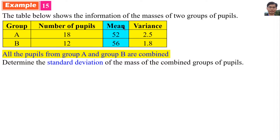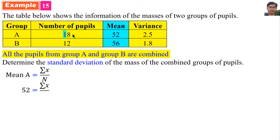We combine the mean first. The mean for Group A is summation x per n, and mean A is 52. So 52 equals summation x per n, where n is 18. Therefore, summation x for Group A is 52 multiplied by 18, which equals 936.